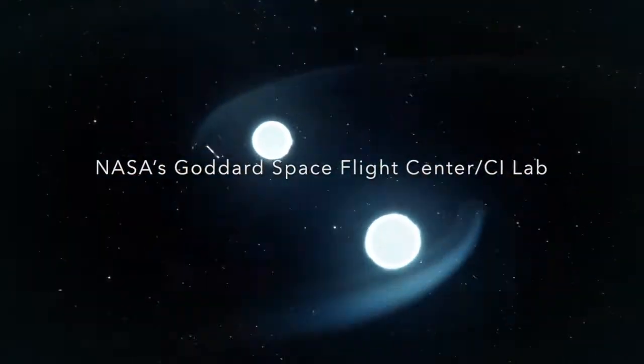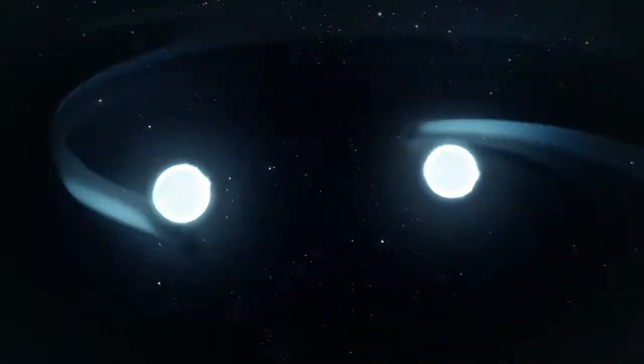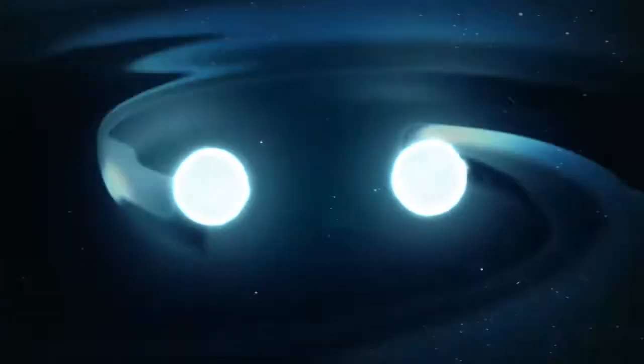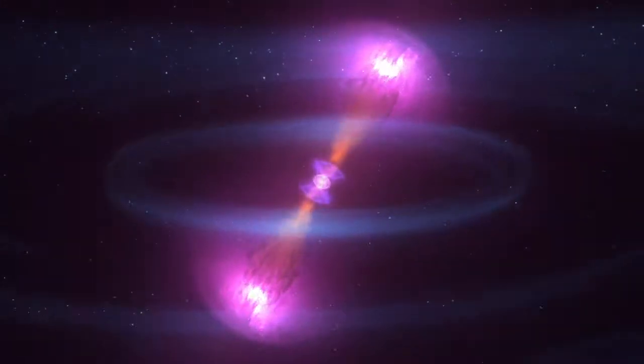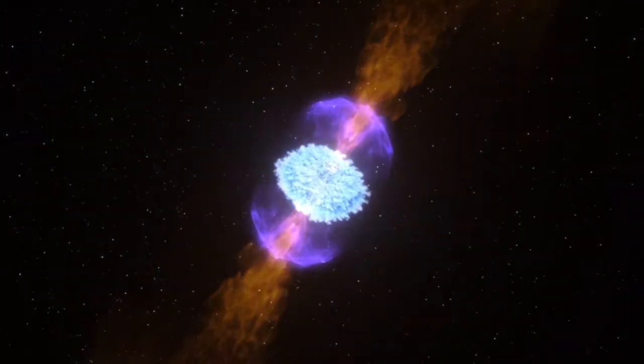You might have heard that LIGO and Virgo together have detected two black holes merging together, but this is the first time we've seen neutron stars actually crashing, colliding in space and causing space-time to jiggle and respond to this merger.